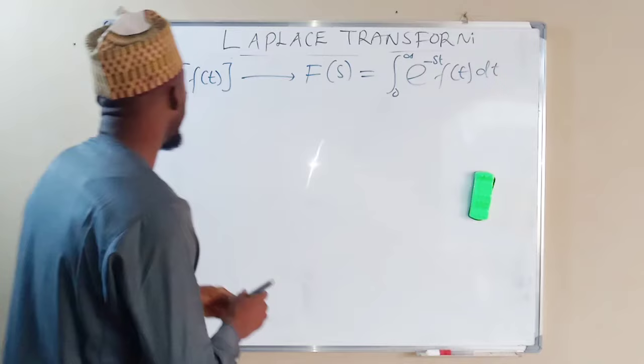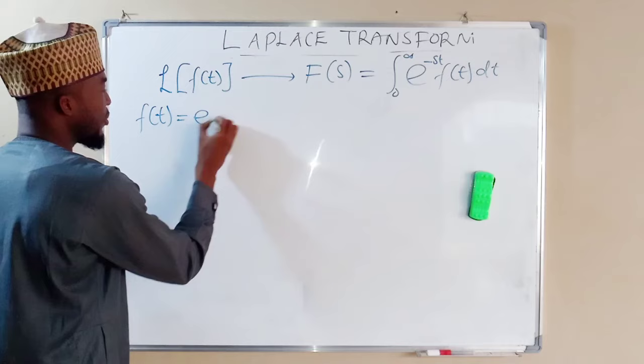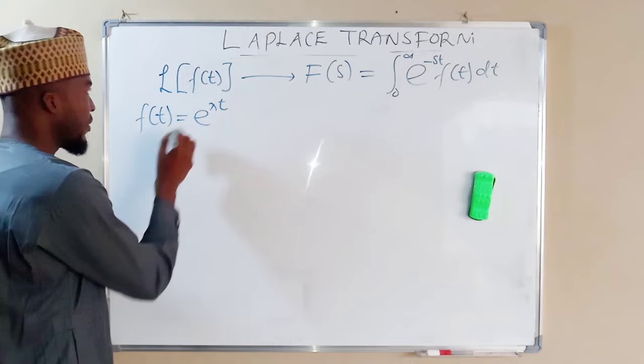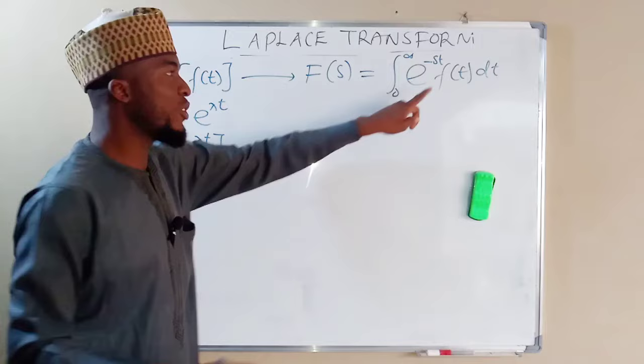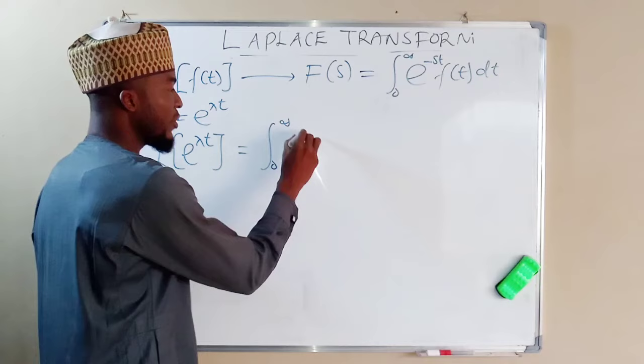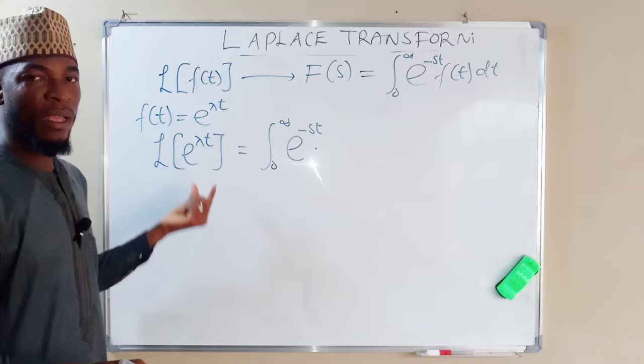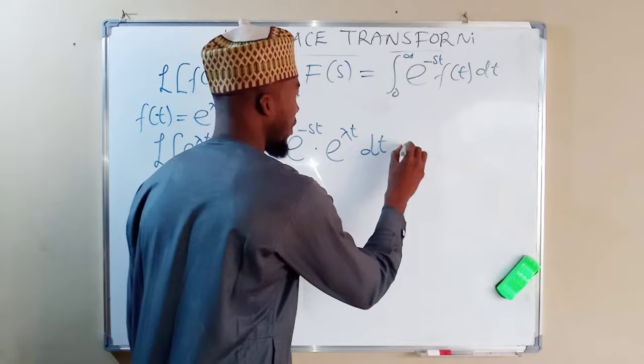In this tutorial we are going to derive five fundamental equations that will help us solve subsequent problems. The first one: let f(t) equal exponential λt, where λ is any constant. Therefore, the Laplace transform of e^(λt) is equal to the integral from zero to infinity of exponential negative st times the function e^(λt), with respect to t.